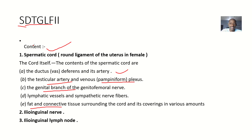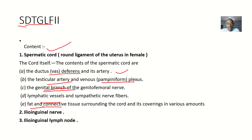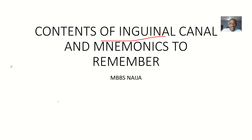So going through the mnemonic: D stands for ductus vas deferens and its artery. T stands for the testicular artery and the venous pampiniform plexus. G stands for the genital branch of the genitofemoral nerve. L stands for lymphatic vessels and sympathetic nerve fibers. F stands for fat and connective tissue surrounding the cord and its covering in various amounts. And the last two I's are ilioinguinal nerve and ilioinguinal lymph node. So that's it about the contents of the inguinal canal and mnemonics to remember them.